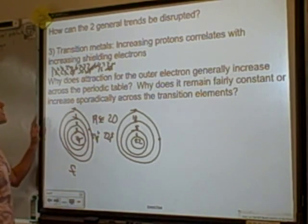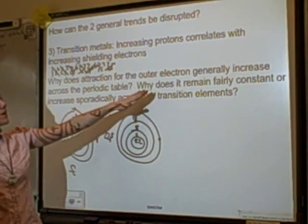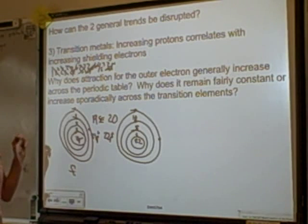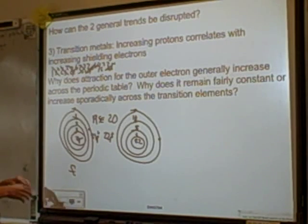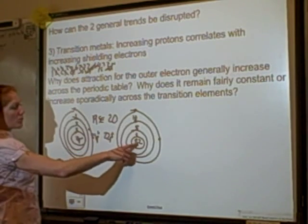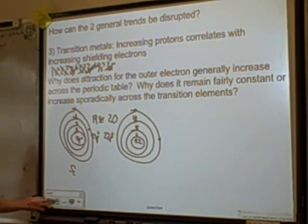As you go across the transition metals, ionization energy remains fairly constant with only small increases here and there, because each added proton is offset by an added shielding electron in the inner d-shell. So you could be asked why it might be easier to remove an electron from a transition metal that has one more proton than another — and that's the reason.